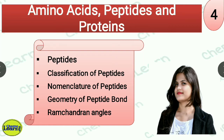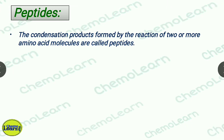Hello everyone, Priyadarshan here. In the previous videos of this series, I have already discussed about amino acids, their synthesis and properties. Now I am going to discuss about peptides, their classification, nomenclature, geometry, and Ramachandran angles. So, let's start with peptides.